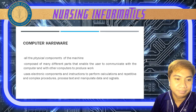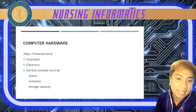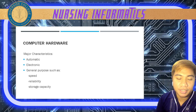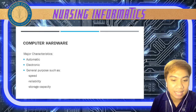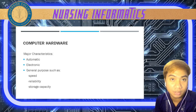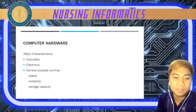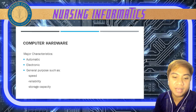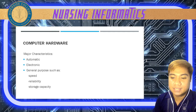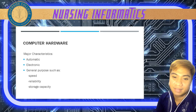Computer hardware has major characteristics. When we talk about automatic, this means it is working by itself — doing or occurring something spontaneously without conscious thought or intention. Next is electronic, which specifically means having or operating with the aid of many small components such as microchips and transistors that control and direct the electric current present in the computer.